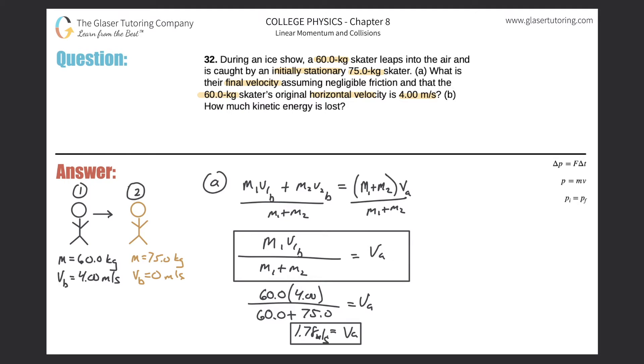Moving on to letter B. How much kinetic energy is lost? So again, this is very similar to the question we did just in 31. The simple formula here would simply be something like this: the kinetic energy lost will equal the initial kinetic energy minus the final kinetic energy. So expanding on that,